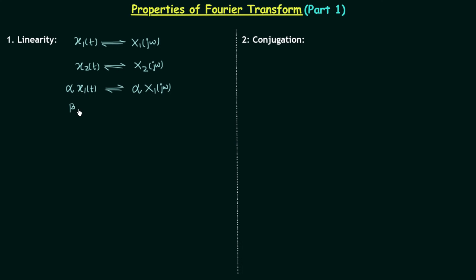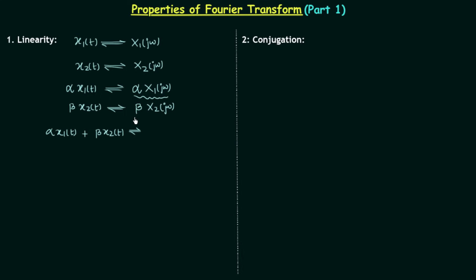Similarly, if we multiply beta to our second signal x2(t), its transform X2(jω) will also get multiplied by beta. And now if we add αx1(t) and βx2(t), the two transforms αX1(jω) and βX2(jω) will also get added, and this property is known as the linearity property. After this we will prove this property, but you have to remember this property.